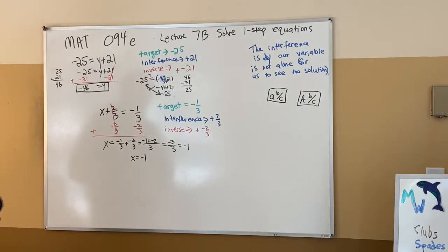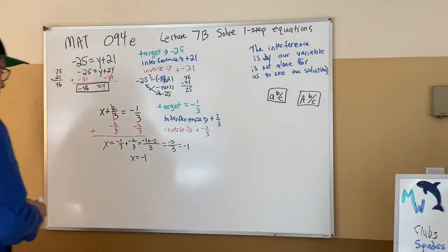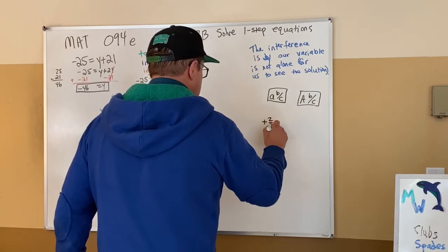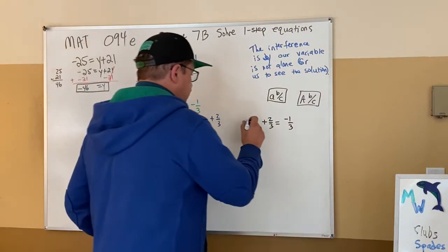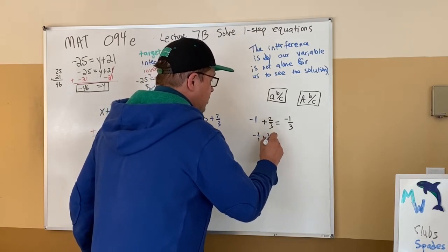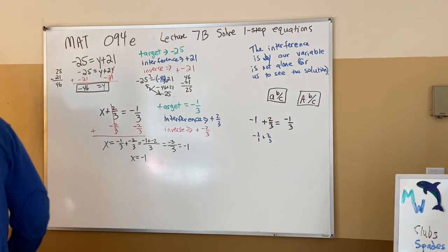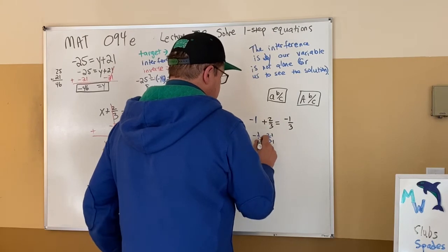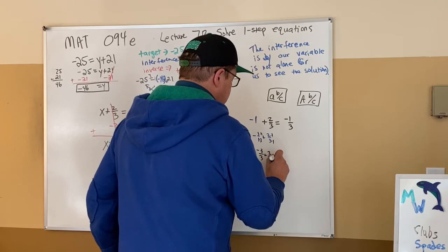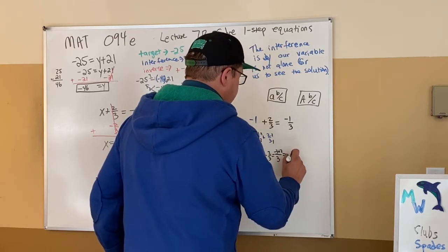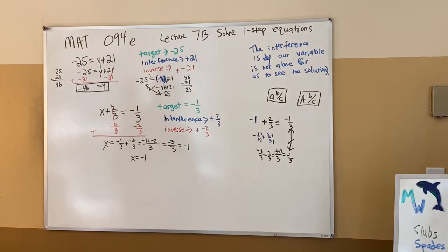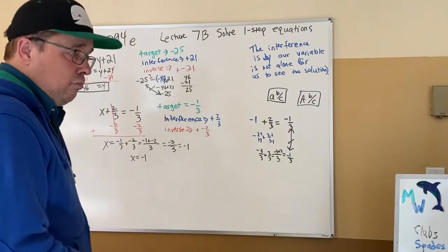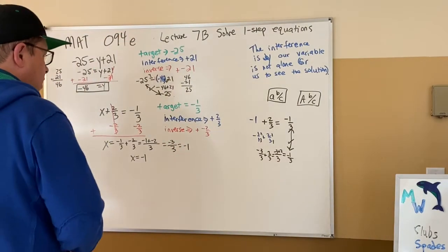We've got to do what the fractions need us to do. Checking: x + 2/3 = -1/3, putting in negative 1. Negative 1 is negative one over one, plus two-thirds. Get a common denominator of 3: negative three-thirds plus two-thirds. Negative three plus two, subtract for one with the negative stronger, giving negative one-third. It hits the target. Negative 1 is the solution — it's the only number that hits the target.